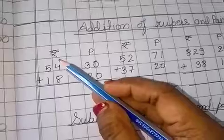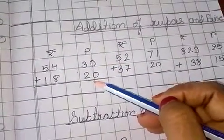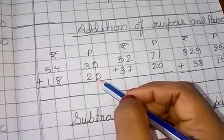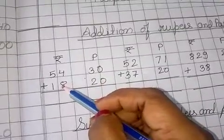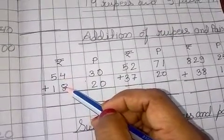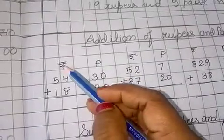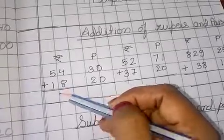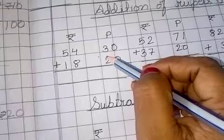So here children, the money or the rupees and paise are already arranged in vertical form. In this arrangement children, we can see that paise are written below the paise and rupees are written below the rupees. In paise column the paises are written and in the rupees column rupees are written.